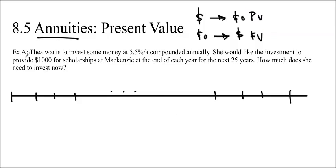This is a really important distinction. So let's just jump right into it. Example A: Thea wants to invest some money at 5.5% per annum compounded annually. She would like the investment to provide $1,000 for scholarships at McKenzie at the end of each year for the next 25 years. How much does she need to invest now?